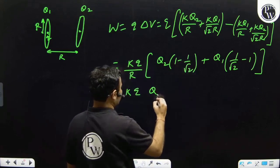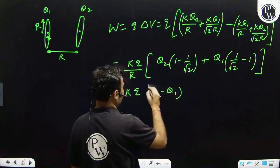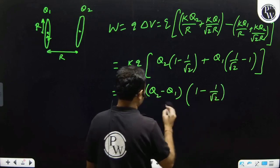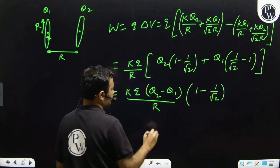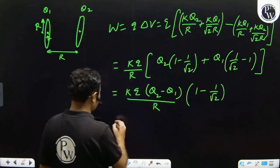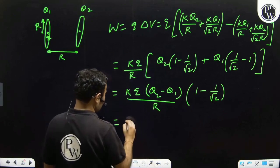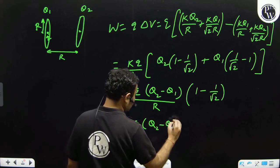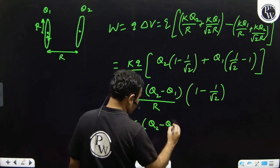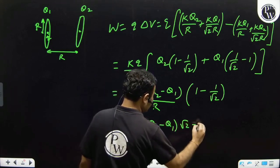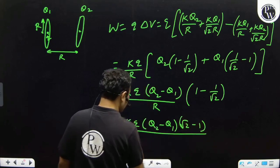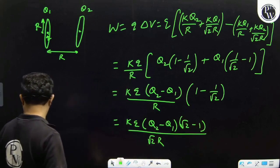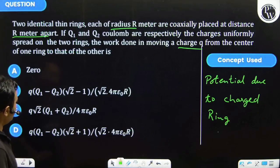So we can write it as q times K, Q2 minus Q1 by R plus Q1 by root 2 R minus Q2 by root 2 R. This could be written as q times K, Q2 root 2 minus Q1 root 2 minus 1 upon root 2 R.